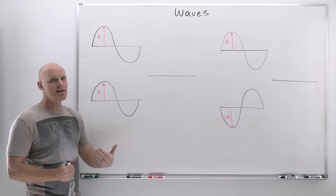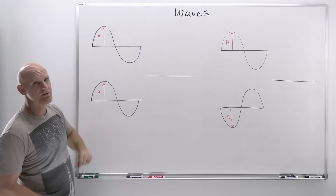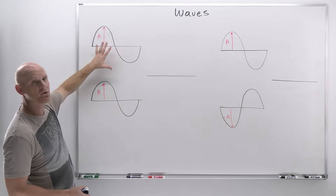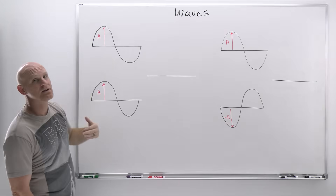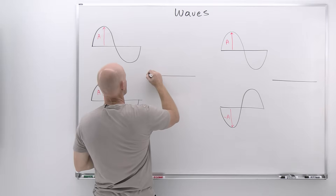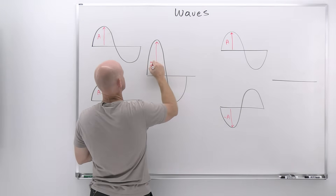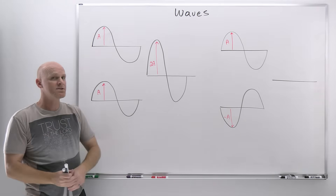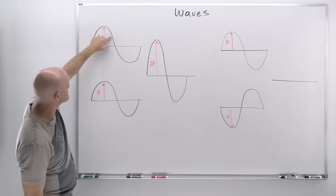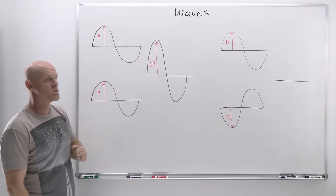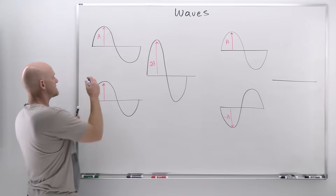With two identical waves where the positive regions line up perfectly, the negative regions line up perfectly, and the nodes line up perfectly, the addition is purely additive — this is constructive interference. The peaks each have amplitude A; adding them gives double the amplitude. The resulting wave has the same frequency and wavelength but double the amplitude. When they line up perfectly like this, we say the waves are in phase.